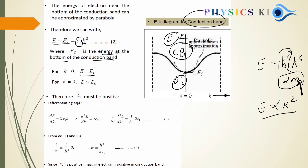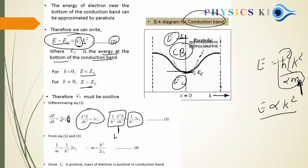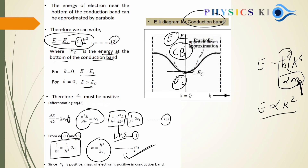Taking the double differentiation of E − EC = C₁K² with respect to K: dE/dK = 2C₁K, and d²E/dK² = 2C₁. Multiplying both sides by 1/ℏ², the left-hand side matches equation 1. So 1/M = 2C₁/ℏ², giving M* = ℏ²/2C₁. Since C₁ is positive, the effective mass in the conduction band is positive. This is equation 4.